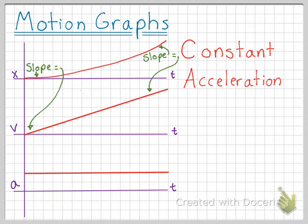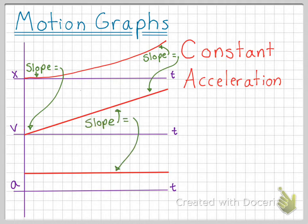The idea about slope also explains this parabolic shape for the position versus time graph. The slope of the position versus time graph at a particular point is the value graphed for the velocity versus time graph at that same time. At the beginning of the graph, the position versus time graph has a small slope and therefore a small velocity. Towards the end, it has a bigger slope and therefore a bigger velocity. The slope of the velocity versus time graph is a constant positive number, so the acceleration versus time graph shows a positive non-zero number.